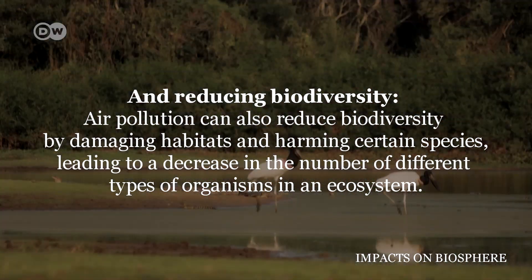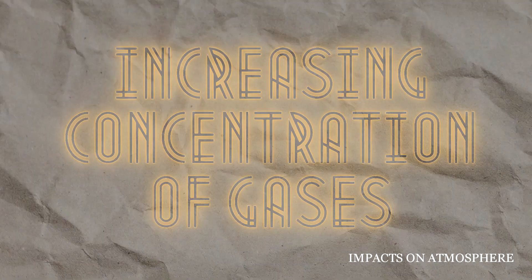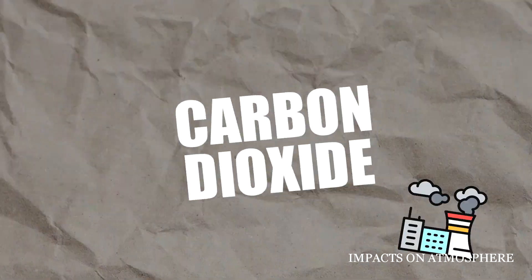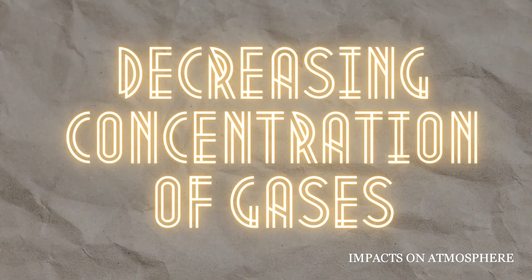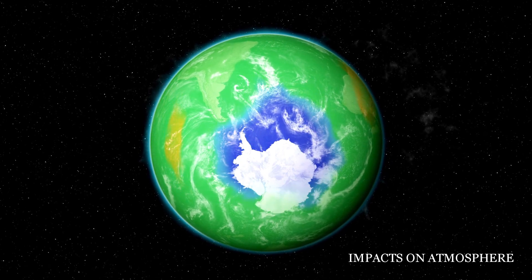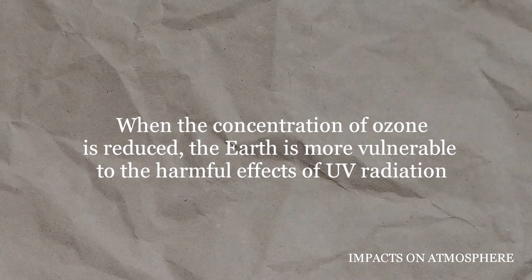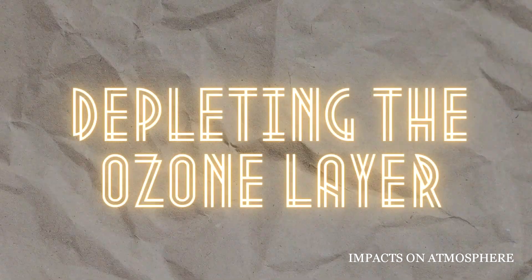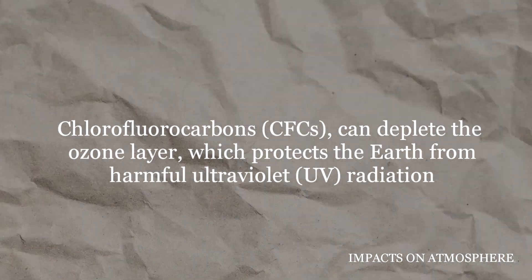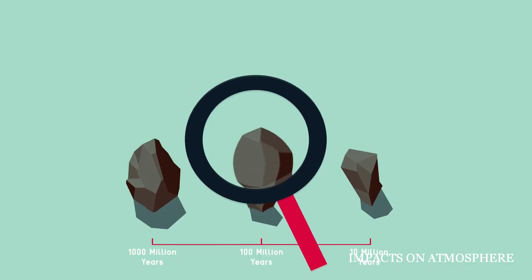Urban air pollution can also reduce biodiversity and impact the makeup of the atmosphere. The increasing concentration of gases such as carbon dioxide, sulfur dioxide, and nitrogen can contribute to climate change and harm human health. In turn, pollution can decrease the concentration of gases such as ozone in the atmosphere. Ozone is a natural gas that protects the earth from harmful ultraviolet radiation. When ozone concentration is reduced, the earth is more vulnerable to UV radiation. Certain air pollutants such as chlorofluorocarbons can deplete the ozone layer.